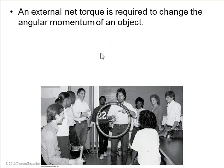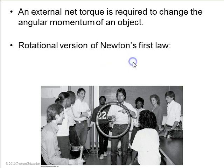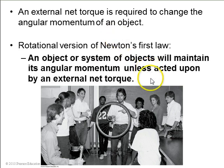And an external net torque is required to change the angular momentum of an object. That's the rotational version of Newton's first law. An object will maintain its angular momentum unless acted upon by an outside torque. Like here's Paul Hewitt. He's providing a torque to this wheel and that's causing it to change its angular momentum.